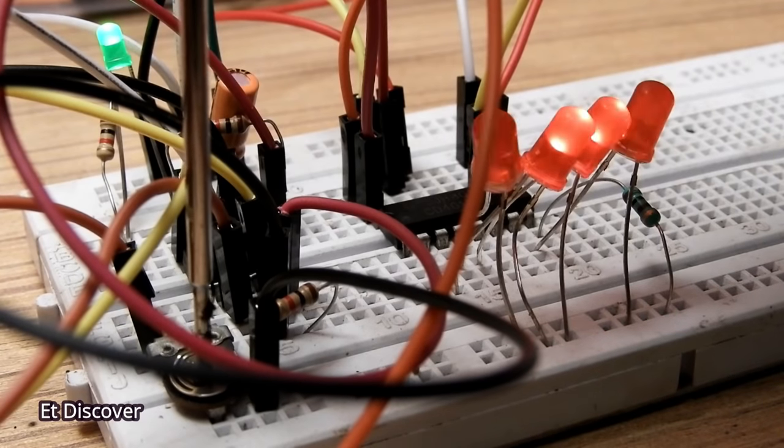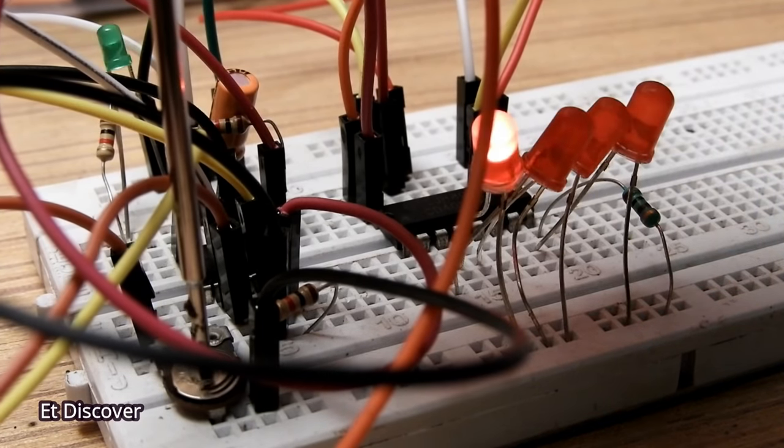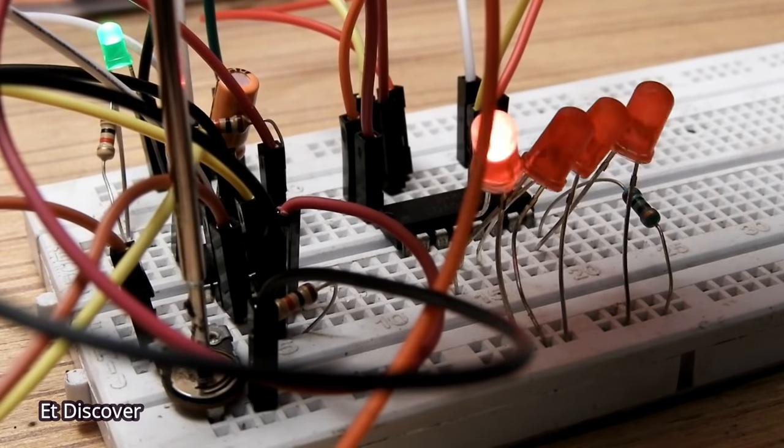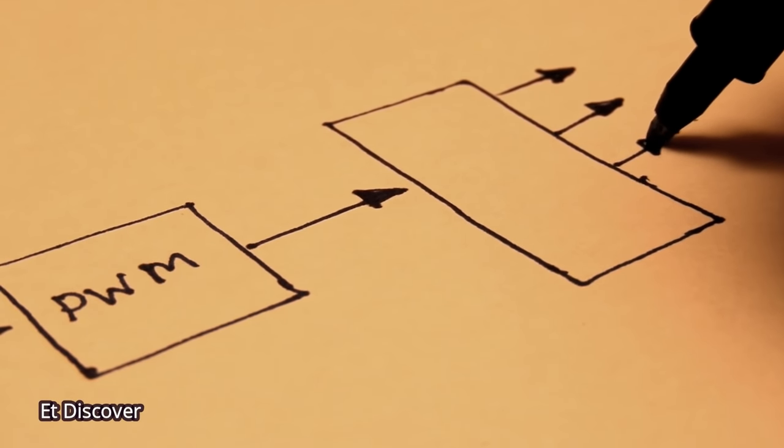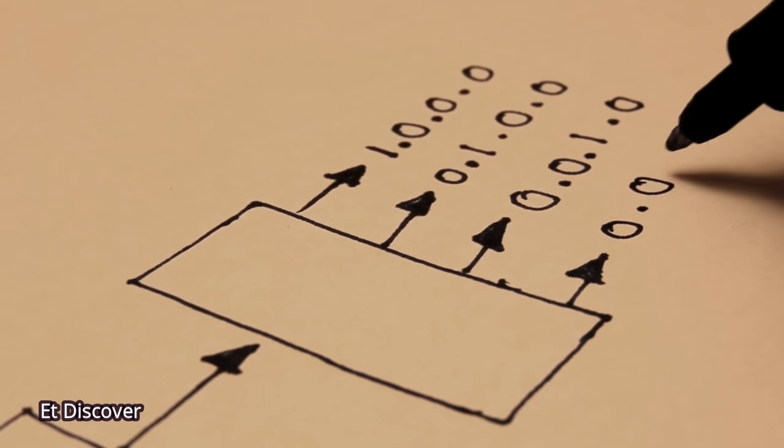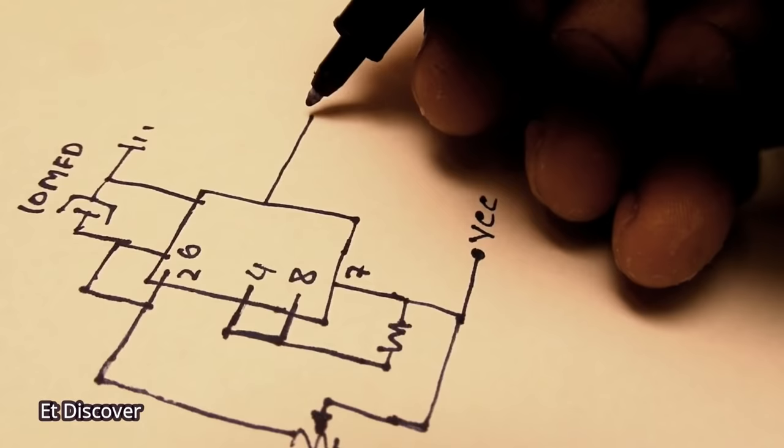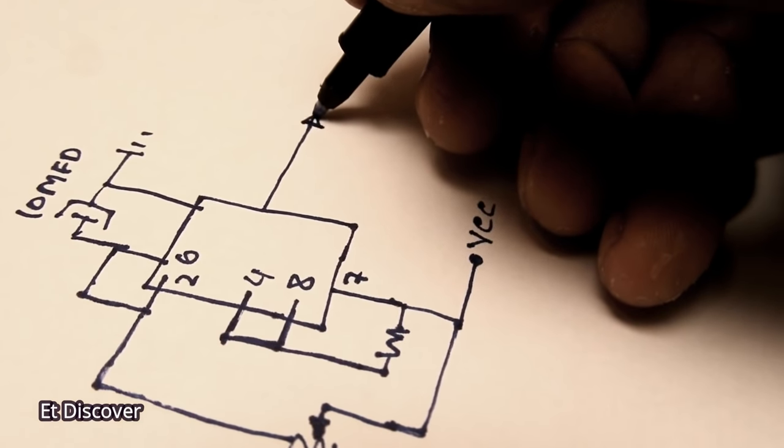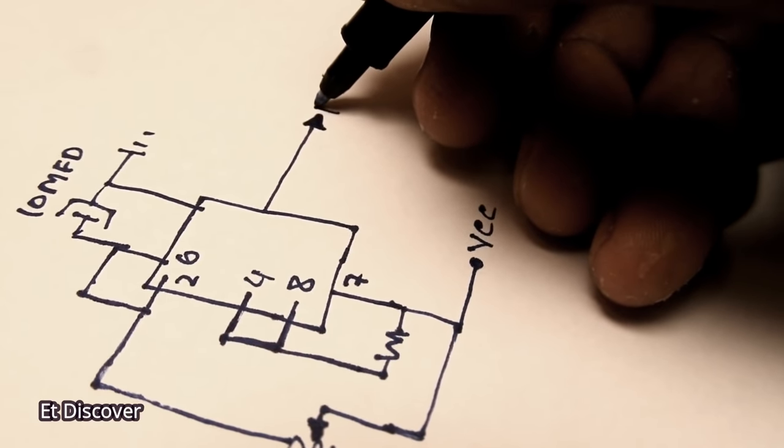But to drive a stepper motor we need four different sequences. So for that I use another IC which will create four sequences from one. This type of binary code will come out from this IC. So let's see how to create a PWM signal. For that I made a circuit diagram.